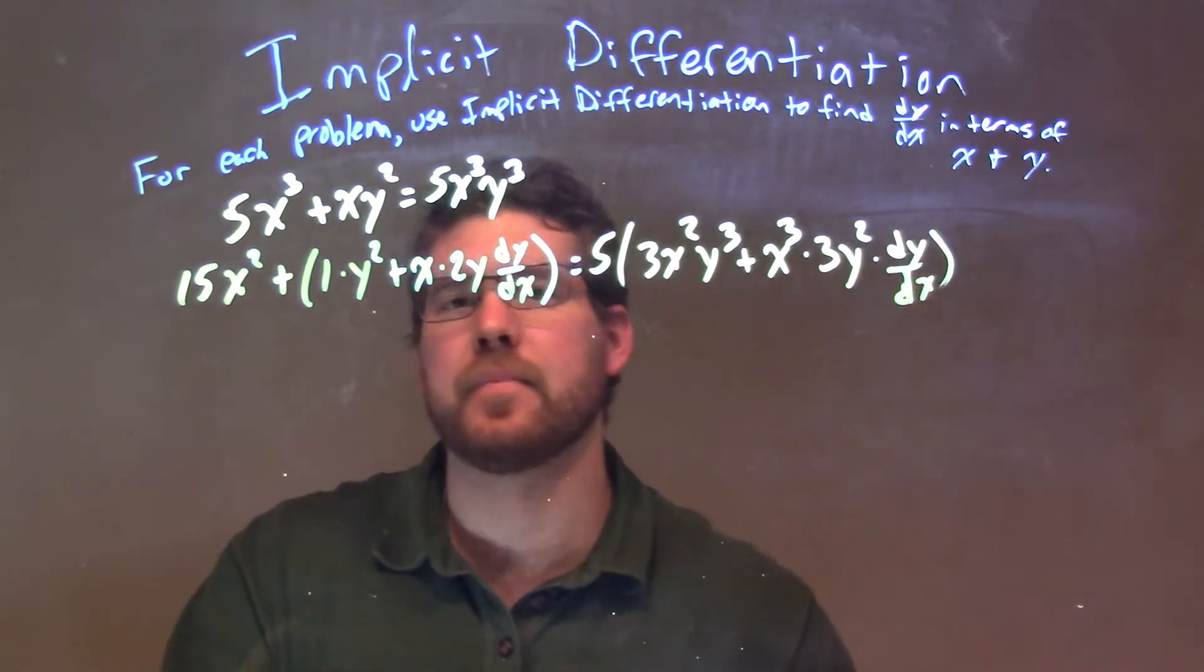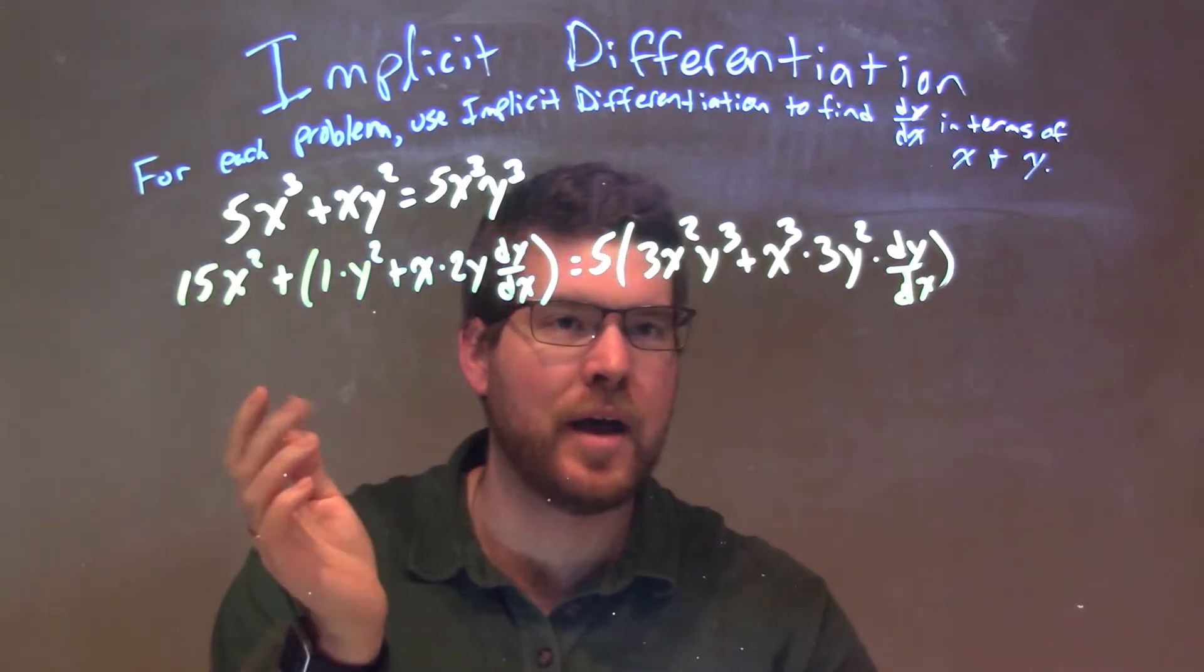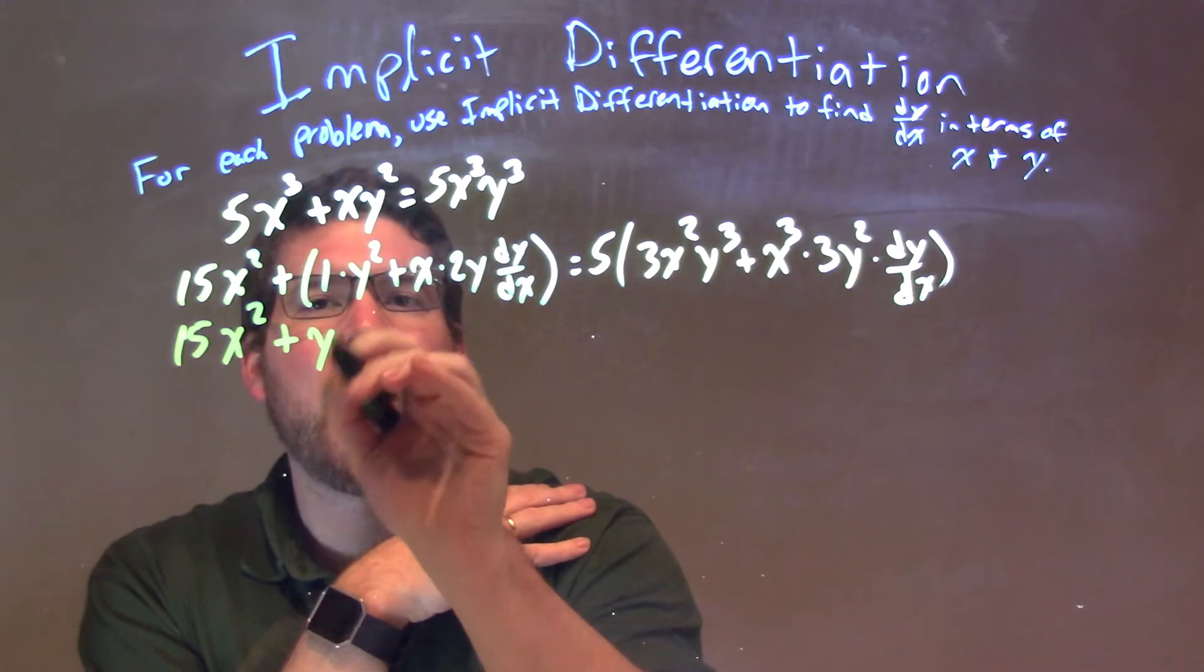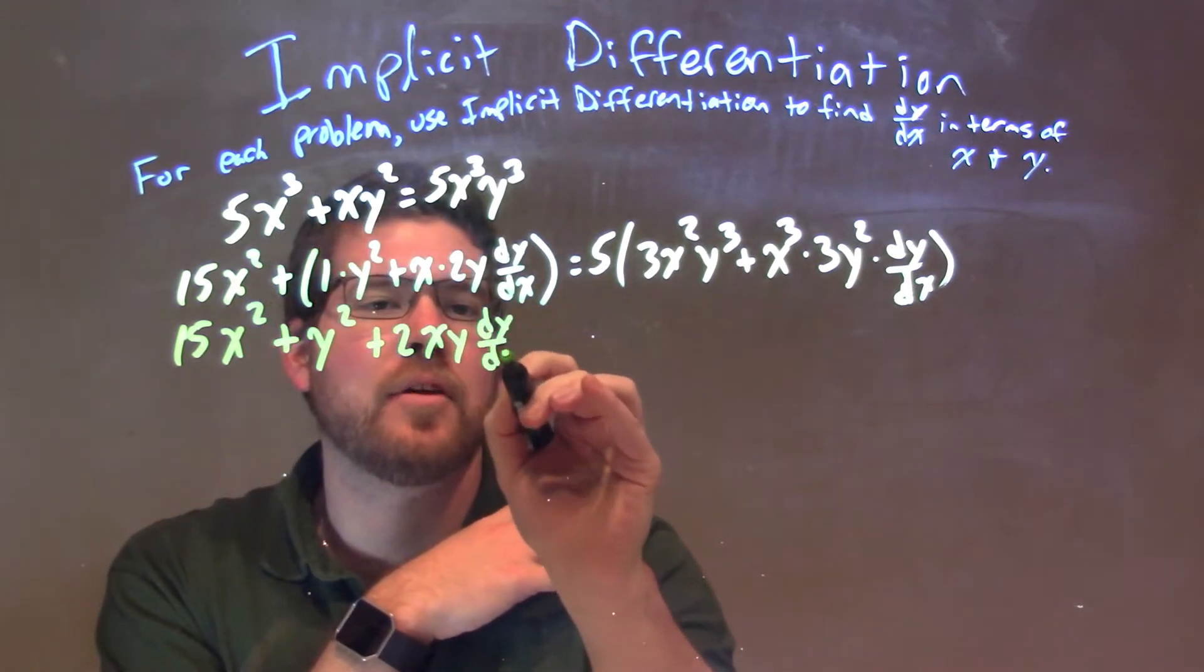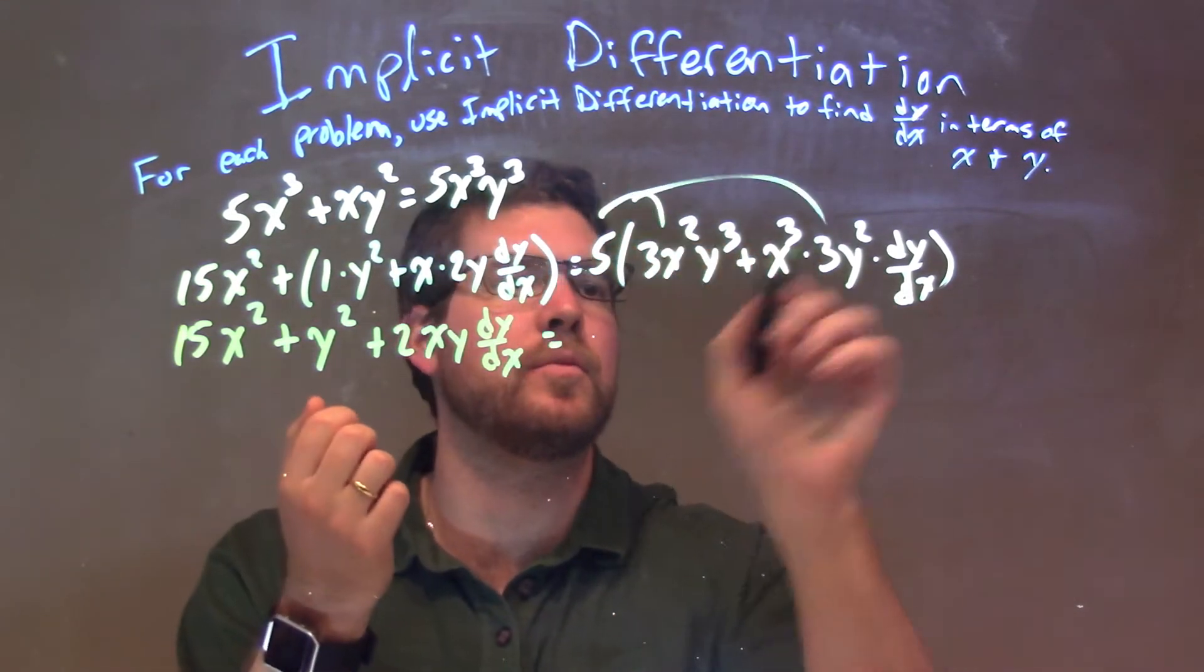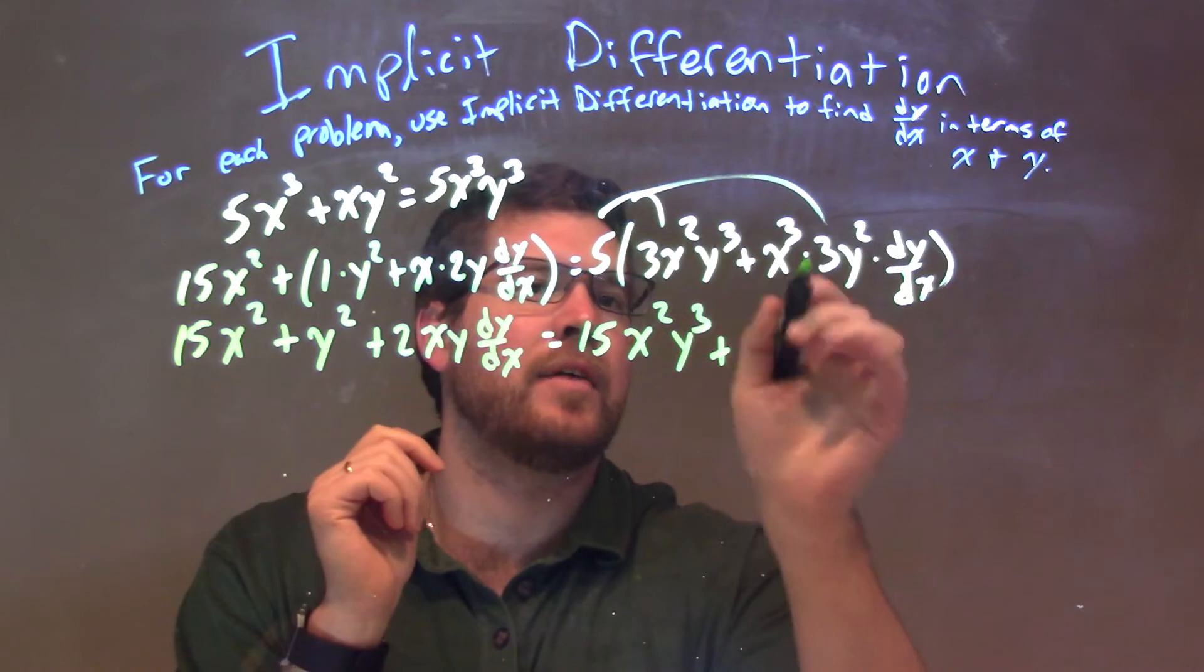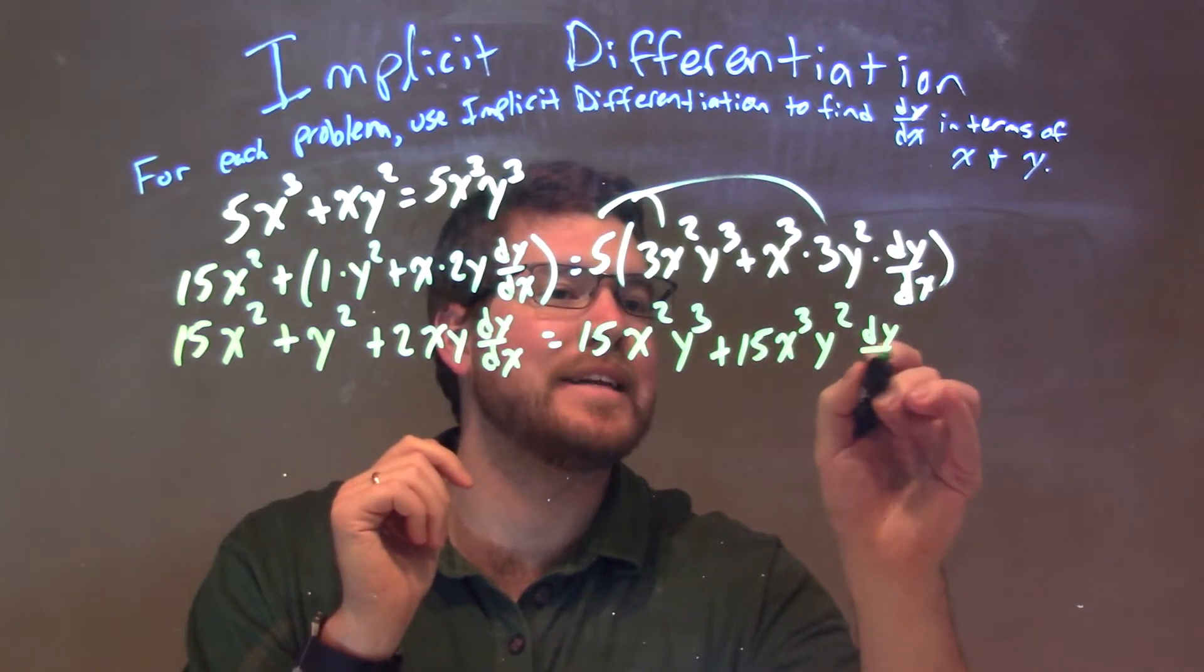All right. So, now what we're going to do, let's go simplify this, and what I'm going to do is now distribute that 5 across. So, we have 15x squared plus y squared plus 2xy dy/dx here on the left. Right-hand side, distribute the 5 to the parts. 5 times 3 is 15. So, we have 15x squared y to the third plus, well, 5 times 3, this 3 is 15, 15x to the third, y squared dy/dx.